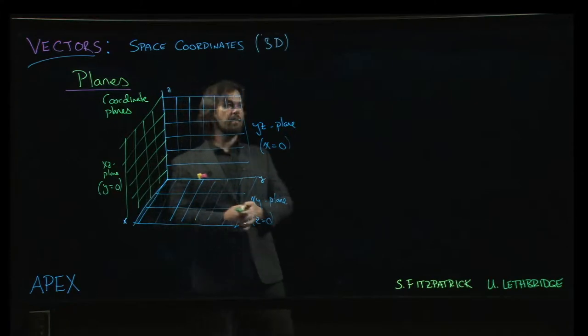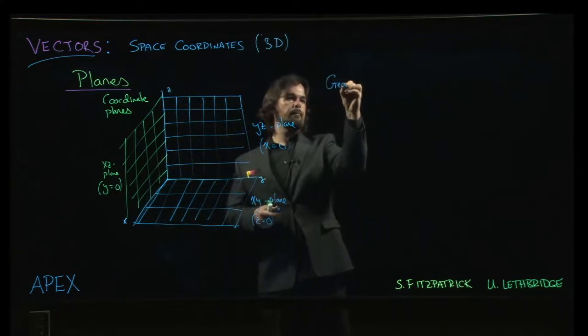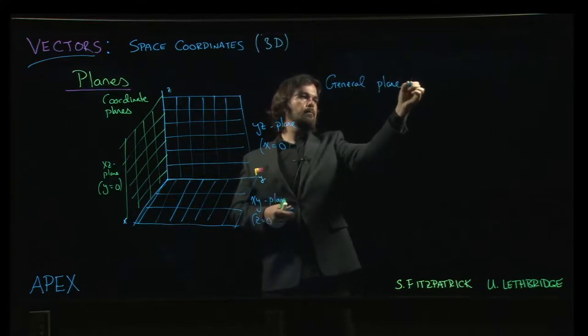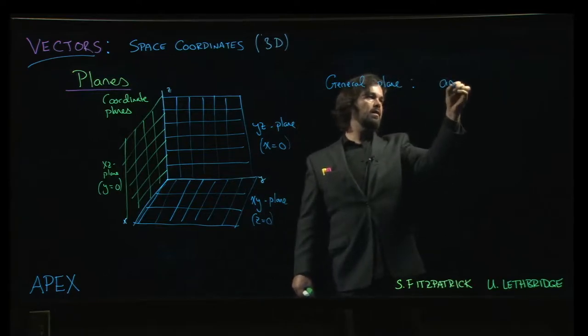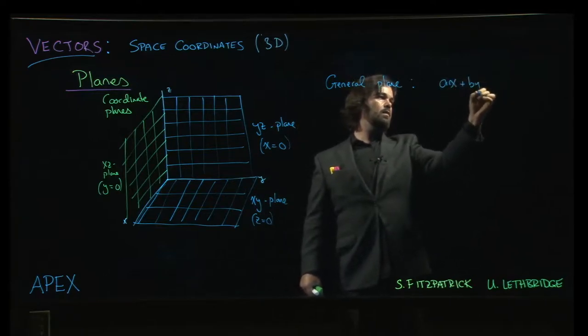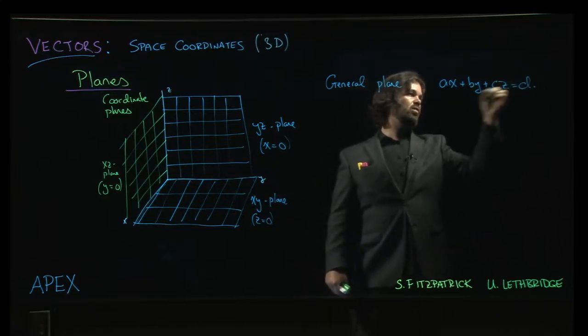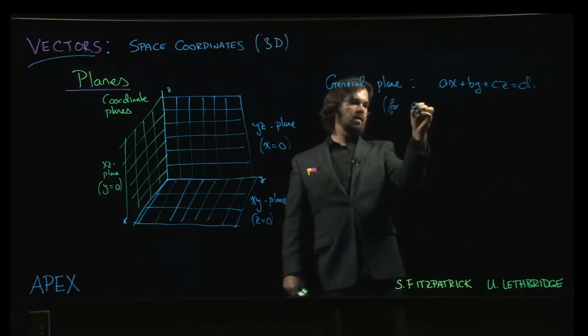But we do have this idea that the coordinate planes divide space up into these three regions. Now, in general, a general plane is going to look like, say, ax plus by plus cz is equal to d.